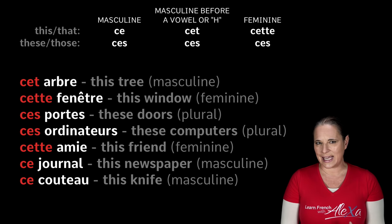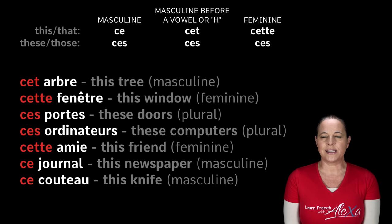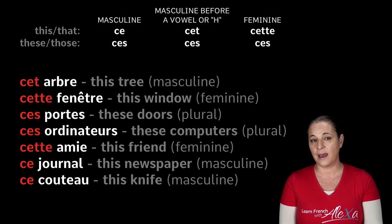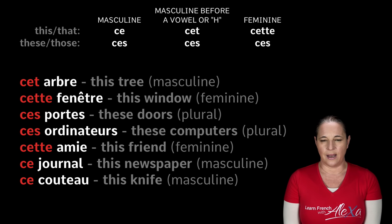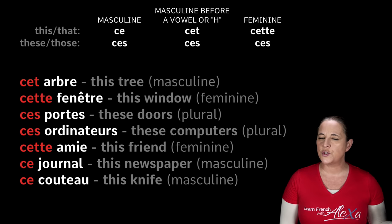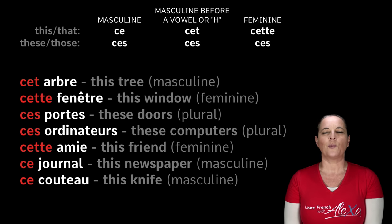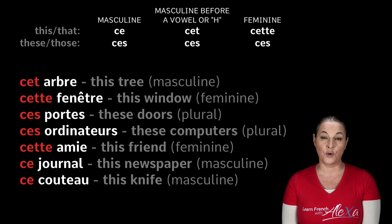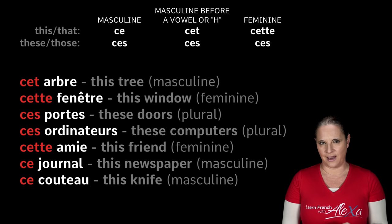Amie has an E at the end, so it's feminine — a girlfriend. So we say cette amie, C-E-T-T-E amie. Journal means newspaper and it's masculine, so we say ce journal — this newspaper. And couteau is also masculine, so ce couteau — this knife.